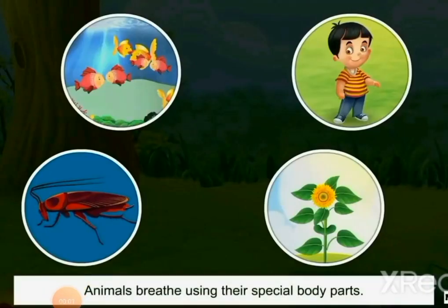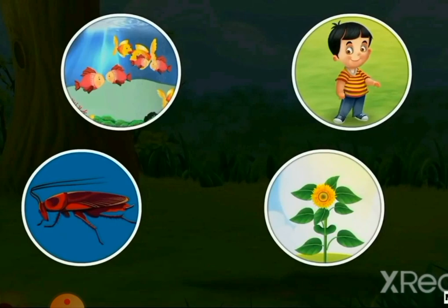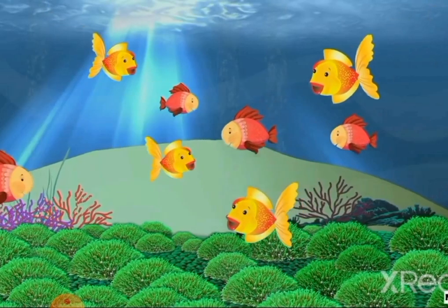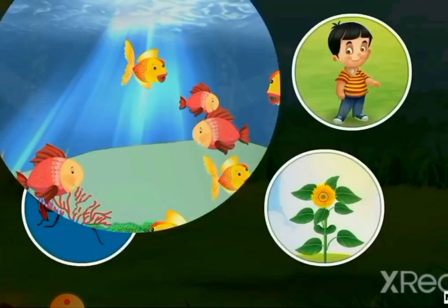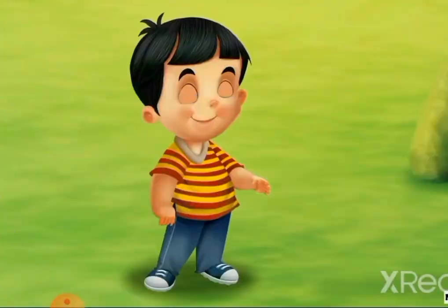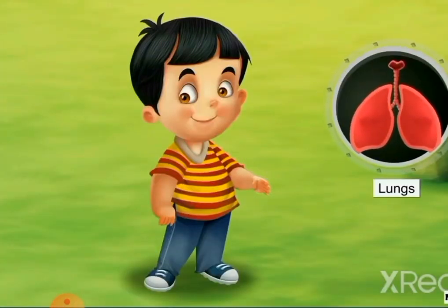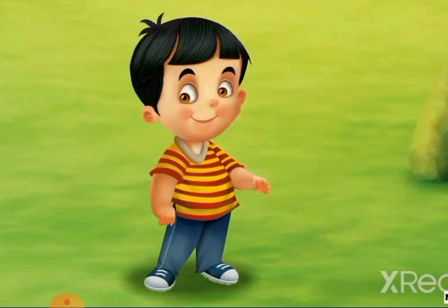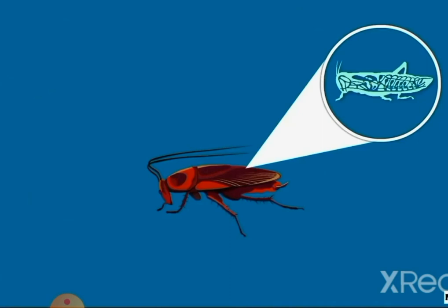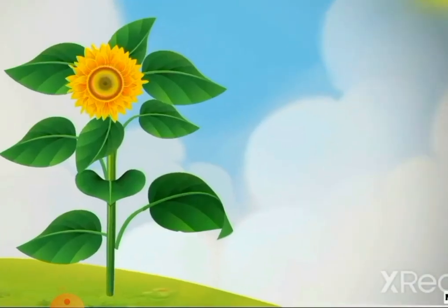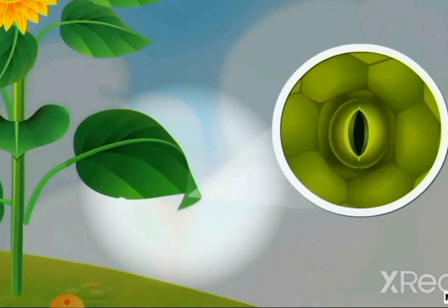All living things breathe. Breathing is the process by which living things take in and give out air. For example, a fish uses its gills to breathe — gills are the organs that help fish take in air present in water. Human beings, dogs, and cats breathe in air through their lungs and noses. Insects use tiny holes on their body called spiracles to breathe. Plants breathe with the help of tiny holes called stomata, which are present on their leaves.